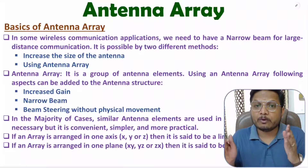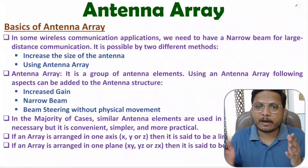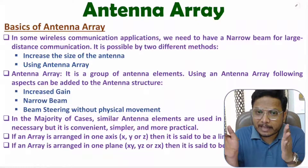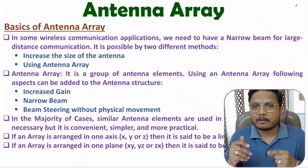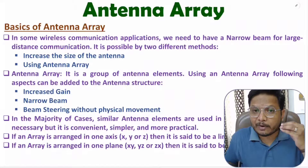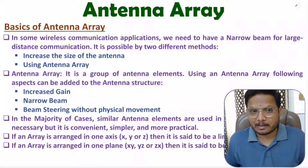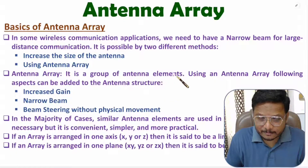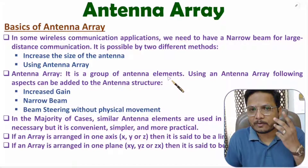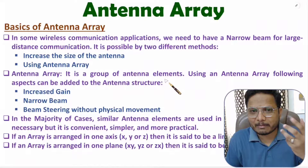The second method is to have an antenna array. In antenna array, we have a group of antenna elements. Because of multiple antenna elements, we can have a narrow beam by which we can communicate to long distance. Using antenna array, there are a few advancements that we add with the antenna structure. Like, you can have increased gain because of the group of antenna elements.